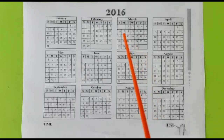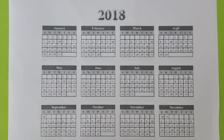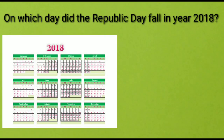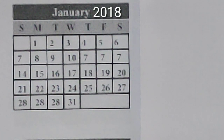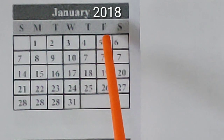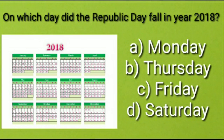So dear students, today we have learned to solve some questions based on calendar. Now it's time for today's question: on which day did Republic Day fall in the year 2018? We have 4 options — Option A is Monday, Option B is Thursday, Option C is Friday, and Option D is Saturday. We celebrate Republic Day on 26th January. To find the day of Republic Day in 2018, we will see the calendar of January 2018. On 26th January 2018, the day was Friday, which is Option C.